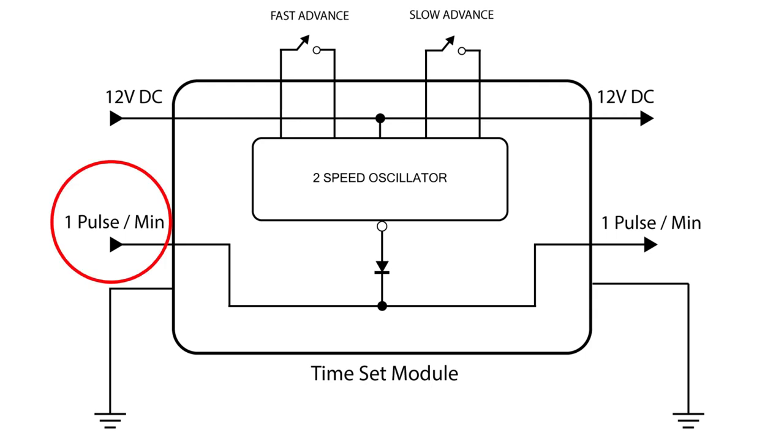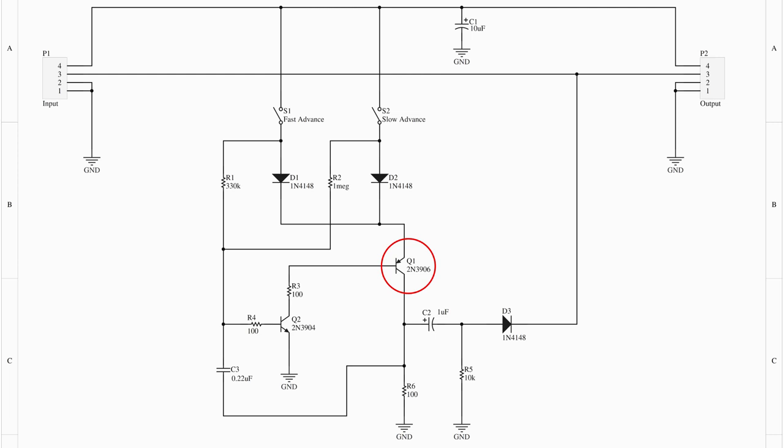The time set module sits in line with the 1 pulse per minute signal. When you press the fast advance or slow advance button, it injects pulses of different speeds to advance the counters. That's how you set the time. A two-transistor oscillator creates pulses of two different frequencies depending on which bias resistor is selected. A diode ORs the output pulses back into the 1 pulse per minute line to advance the counters.